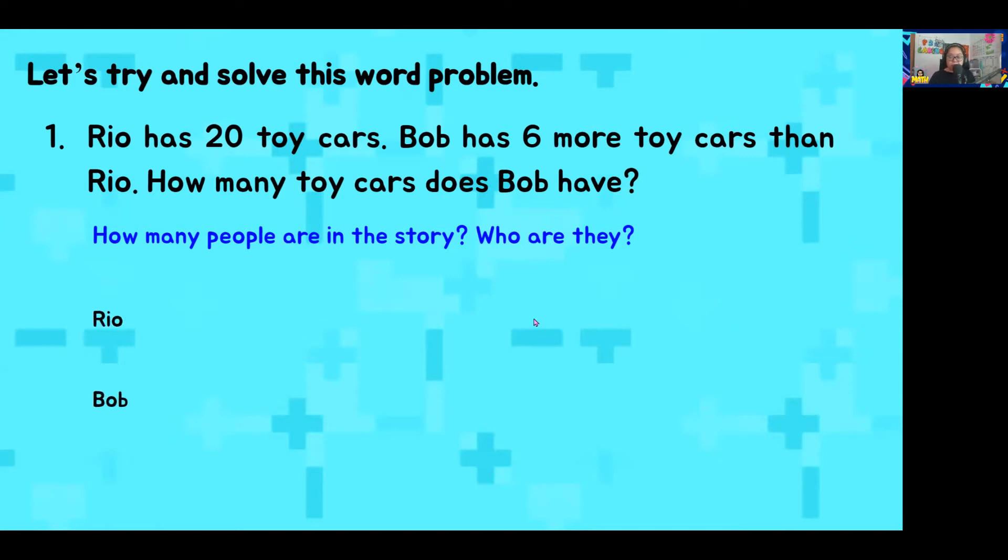To start our model, we need to write the names of the two people in the story. Rio and Bob. If you notice, Ms. Kia wrote them down. One is at the top, the other is at the bottom, and there's a bit of a space in between. We have space for our models. Those are the people in our story. Next, we will make a model for Rio. Here it is. And Rio has 20 toy cars. In that model, we will put the bracket for it and the number 20. Clear so far?